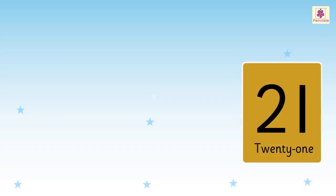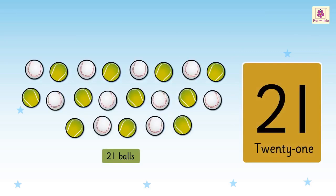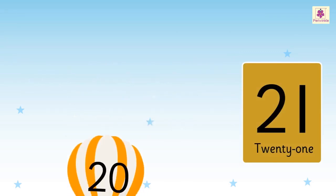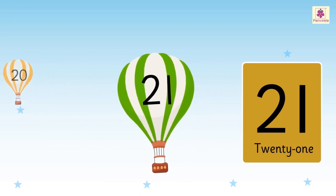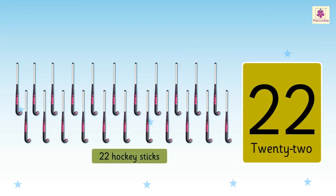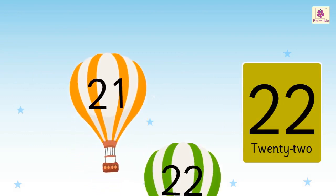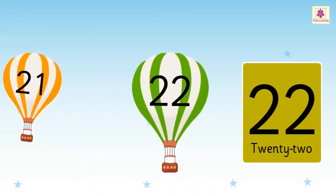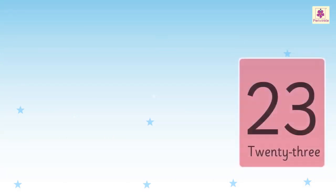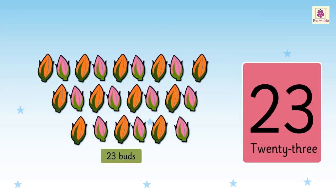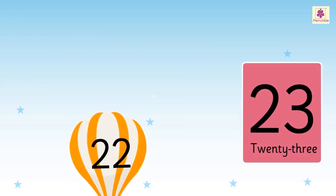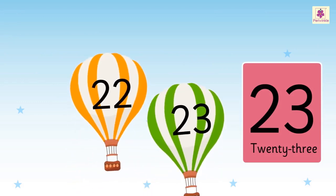Number 21, here we can see 21 balls. 21 comes after 20. Number 22, here we can see 22 hockey sticks. 22 comes after 21. Number 23, here we can see 23 buds. 23 comes after 22.